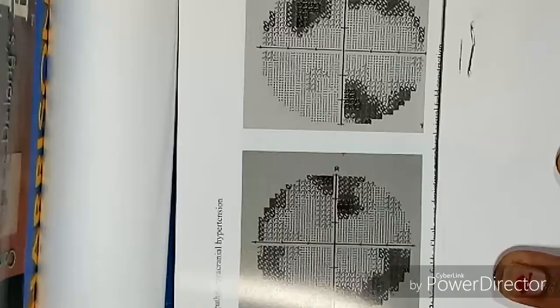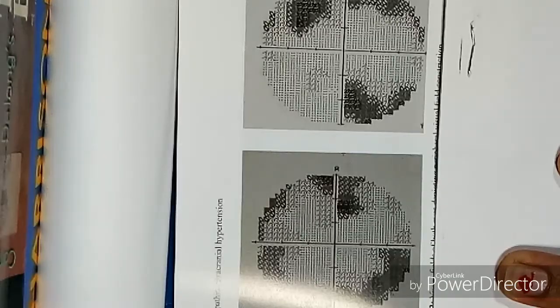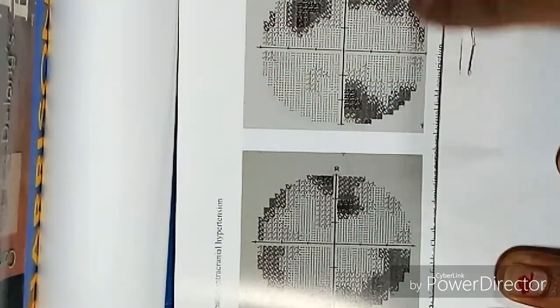Visual fields of this patient showed peripheral constriction. Fundus examination of this patient showed frank disc edema in both eyes with obscuration of the vessels as they were leaving the disc.